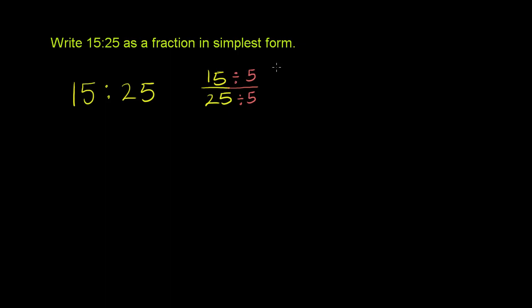So now we get 15 divided by 5 is equal to 3, and 25 divided by 5 is equal to 5.